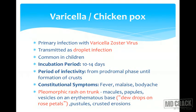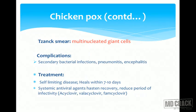Coming to varicella or chickenpox — it is a primary infection with varicella zoster virus, transmitted as a droplet infection mainly in children. The incubation period is 10 to 14 days, and the period of infectivity ranges from the prodromal phase until crust formation. Patients present with constitutional symptoms like fever and body ache, followed by a pleomorphic rash on the trunk including macules, papules, and vesicles on an erythematous base — called dew drops on rose petals sign — along with pustules and crusted erosions. Tzanck smear shows multinucleated giant cells. Complications include secondary bacterial infections, pneumonitis, and encephalitis. Chickenpox is self-limiting, healing within 7 to 10 days; systemic antiviral agents like acyclovir can hasten recovery and reduce the period of infectivity.